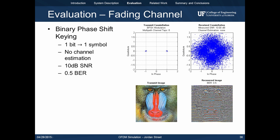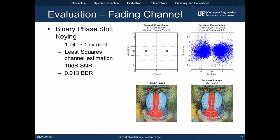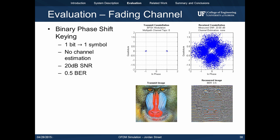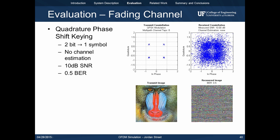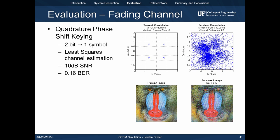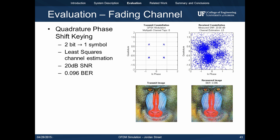We now consider the effects of multipath fading. These charts demonstrate the effectiveness of channel estimation. Shown here is the received constellation and image for BPSK in a fading channel without channel estimation. We now apply the estimation and improve the BER dramatically. This is repeated for a higher SNR case with the same results. We now examine QPSK in the fading channel. With no estimation, the recovered image is unrecognizable. Although the BER is still relatively high, by applying estimation we can now recognize the image. This is again repeated for a higher SNR with similar results.